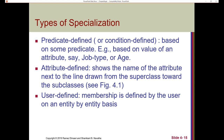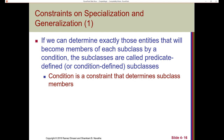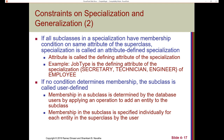To further define predicate-defined subclass: if we can determine exactly the entities that will become members of each subclass by condition, then the subclasses are called predicate-defined or condition-defined subclasses. The condition is a constraint that determines the subclass members. If all subclasses in a specialization have a membership condition on the same attribute, the specialization is called attribute-defined. The attribute is called the defining attribute. For example, job type is the defining attribute — if their job type is specified as secretary, they're a secretary; if technician, they're a technician; if engineer, they're an engineer.